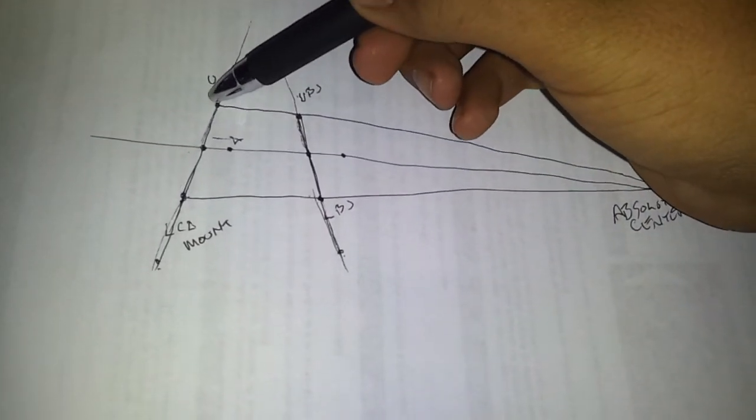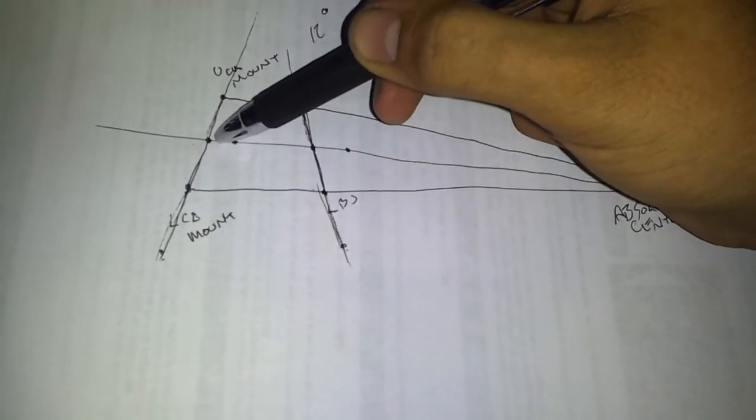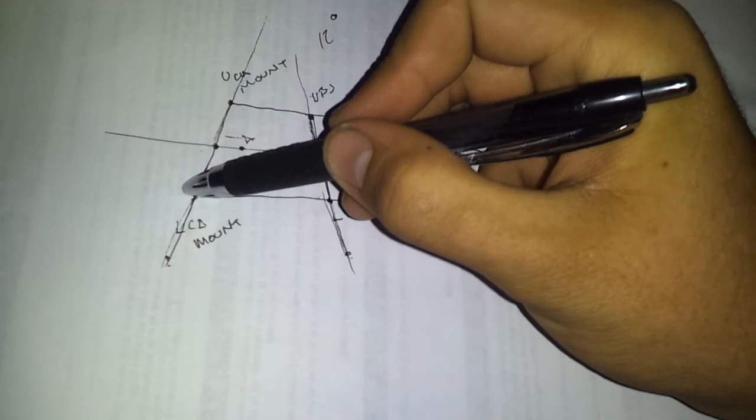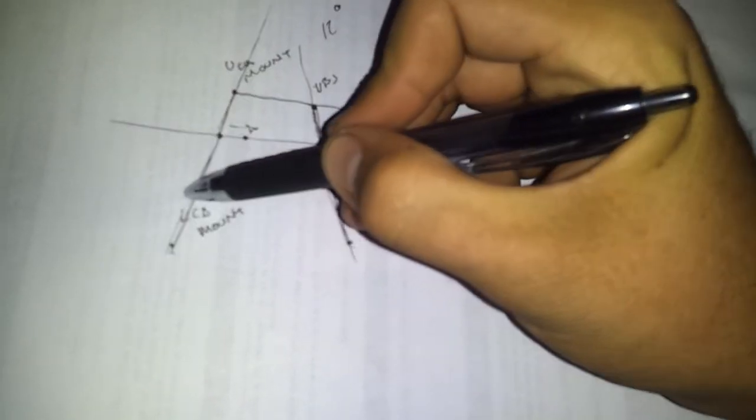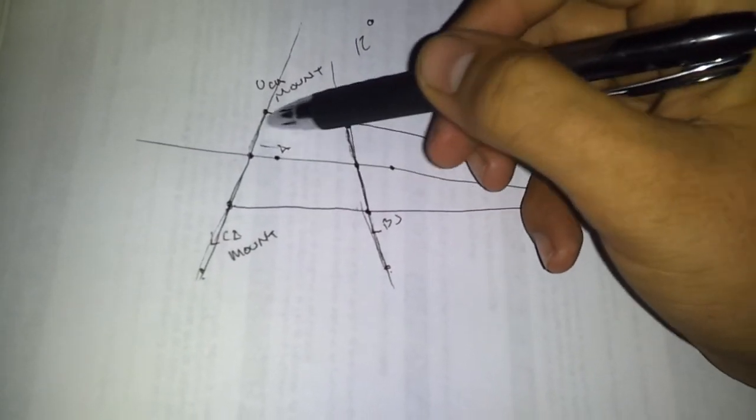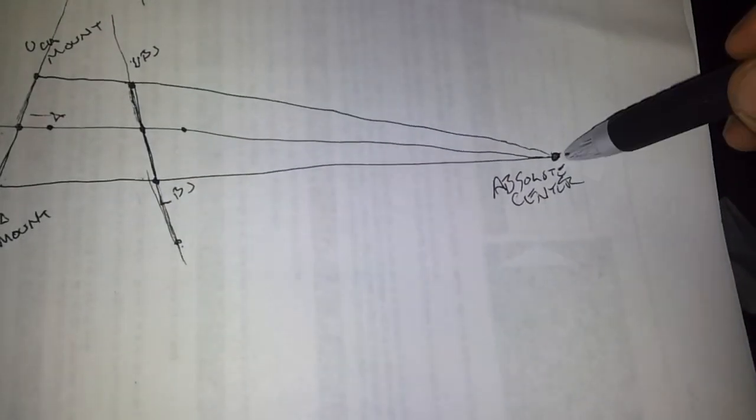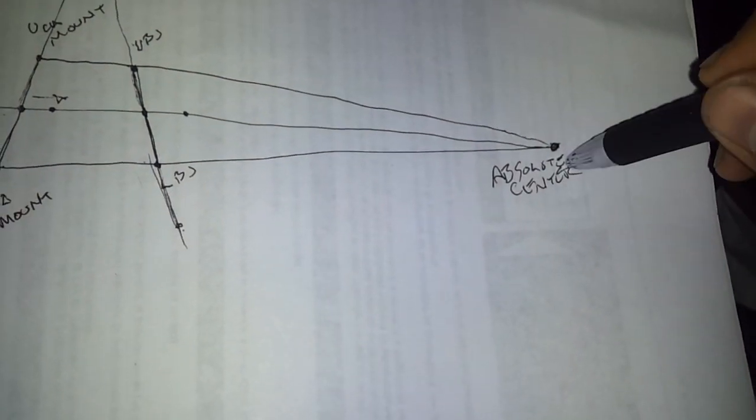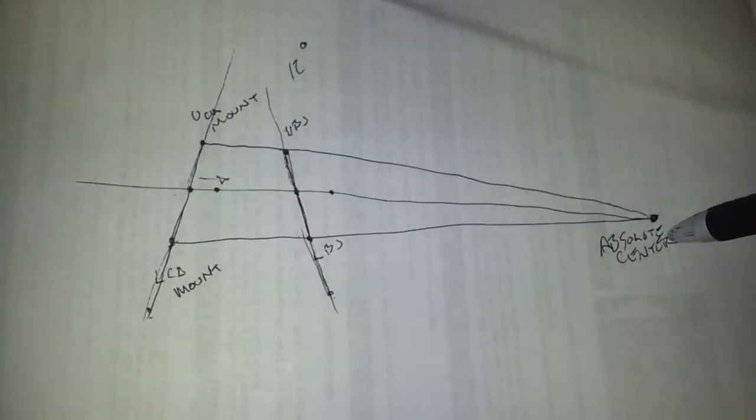So, to reiterate, upper control arms here, lower control arms here, tie rods here. Your mounts, your chassis on the Colorado will be somewhere in this area. Mounts lower in the stock subframe, upper mount where the shock goes, upper ball joint, lower ball joint, tie rod somewhere in the middle. So, absolute center. That is of utmost importance. Hope that helps.